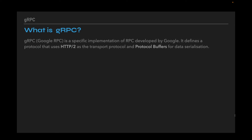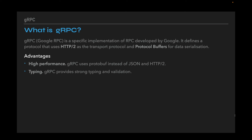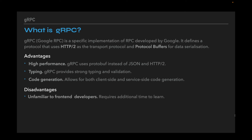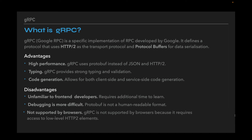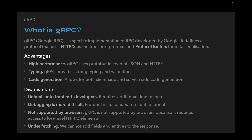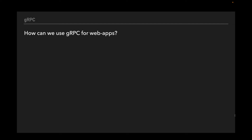gRPC, or Google RPC, is a specific implementation of RPC developed by Google. It defines a protocol that uses HTTP/2 as a transport protocol and protocol buffers for data serialization. Advantages: gRPC uses protobuf instead of JSON and HTTP/2, which gives it better performance; it provides strong typing and validation; and it allows for both client-side and server-side code generation. Disadvantages: it is mostly unfamiliar to frontend developers and requires additional time to learn; debugging is more difficult because protobuf is not a human-readable format like JSON; and gRPC is not supported by browsers because it requires access to low-level HTTP/2 elements, so additional resources are needed. It also struggles with underfetching — we cannot add fields and entities to the response.